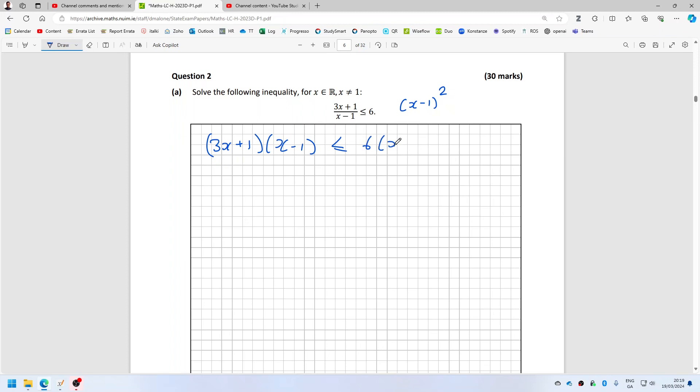we'll get 6 times x minus 1 squared. So on the left we'll have 3x squared and then that's x minus 3x, so that's minus 2x minus 1 less than or equal to 6x squared minus 12x plus 6.